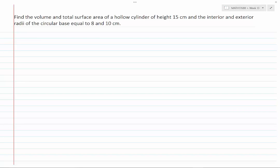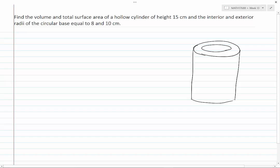Let's sketch the cylinder. I call the interior radius by small r and the exterior radius by capital R and the height by h.